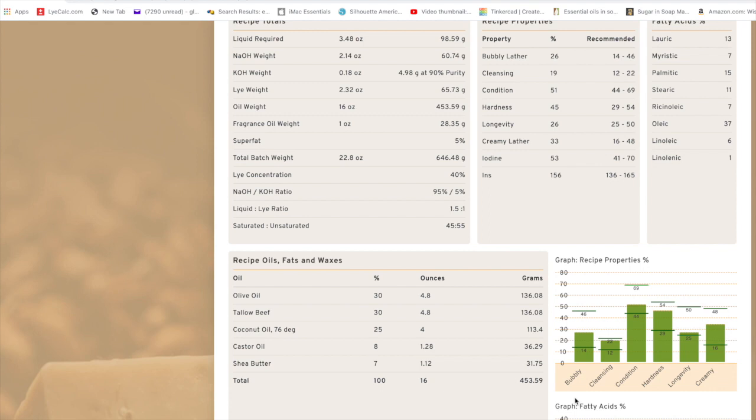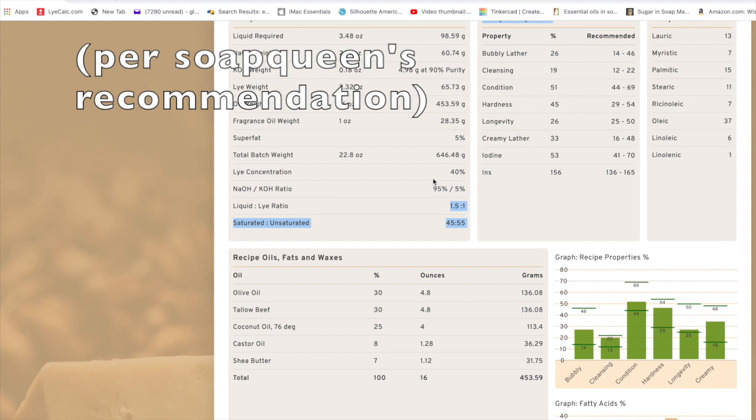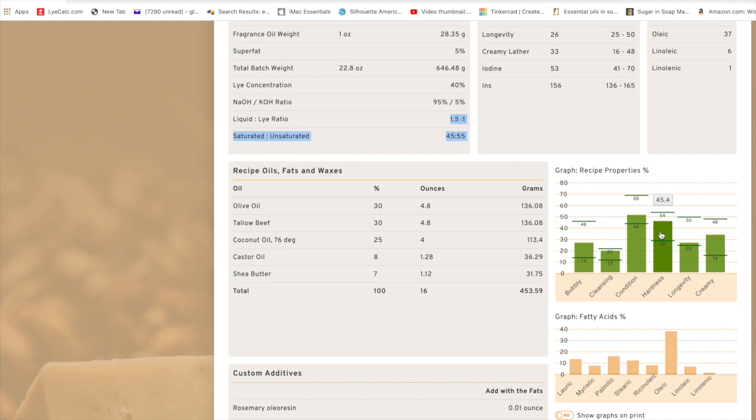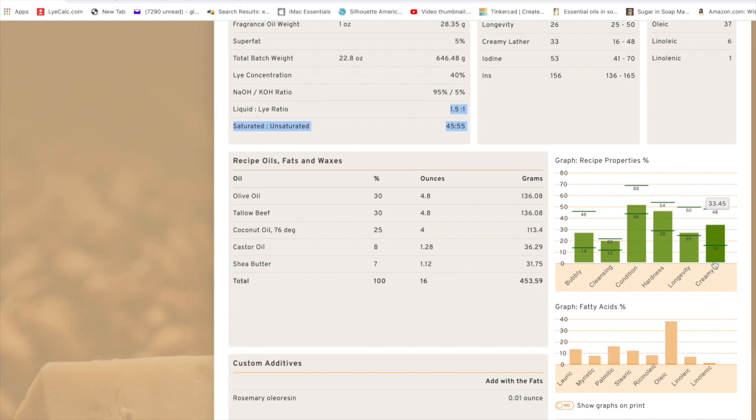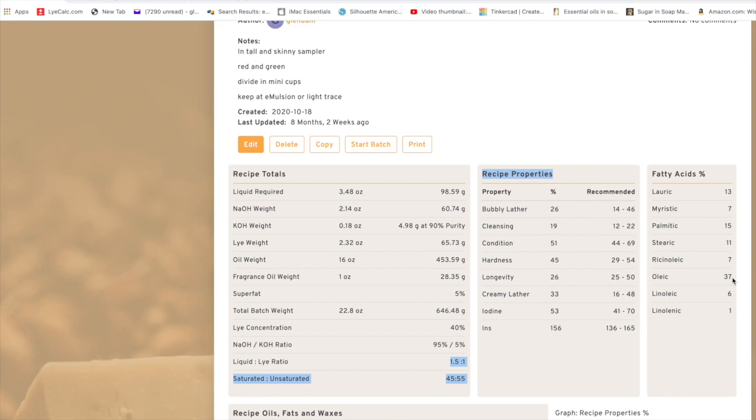The second thing that was working against me was my recipe. I only have 30 percent of olive oil in this recipe, and the rest are butters or solid oils or castor oil, which is known to trace fast. Ideally, if you want to have a fluid recipe, you want to use about 60 percent of slow-moving oils. Me having about 70 percent of fast tracing oils is not good. However, I managed to keep it fluid, and that's what I want to show you.